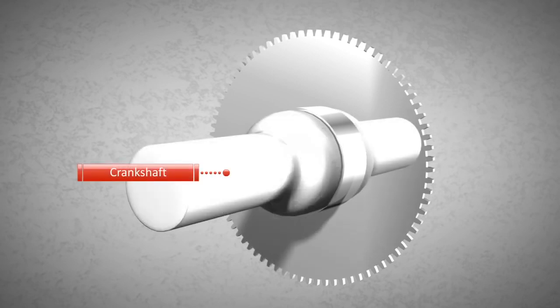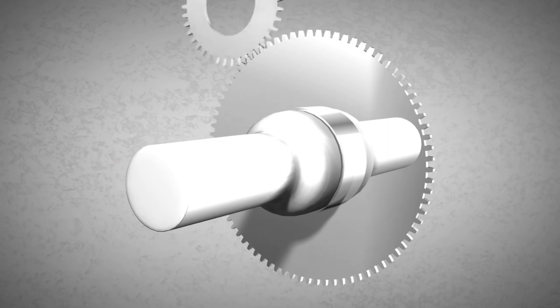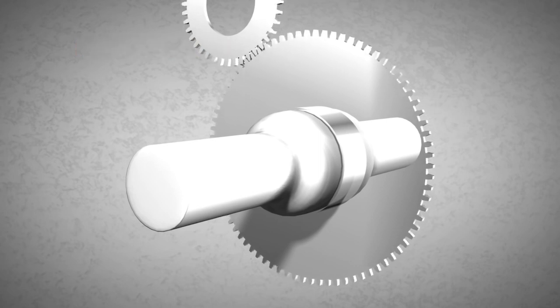The flywheel features external teeth that are used to start the engine of the vehicle. When the car key is turned, the engine is started with the help of a pinion and the battery. After a small amount of time, the engine runs on fuel.